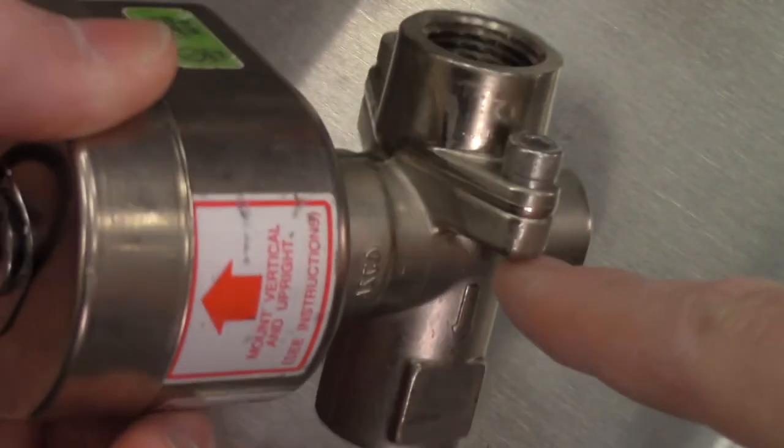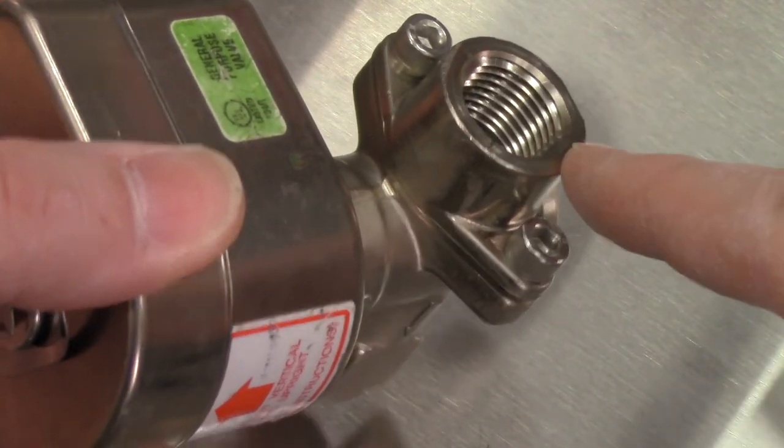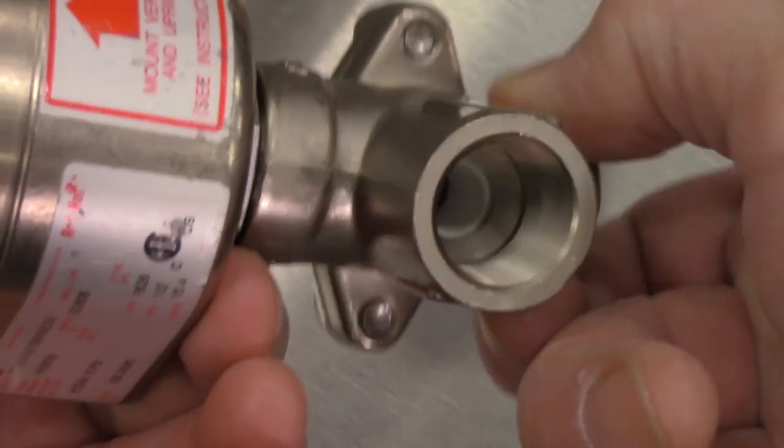On some well-loved fryers and in rare cases, the entire solenoid valve may need to be replaced. This would happen if the valve body is corroded or the inlet threads were deteriorating.